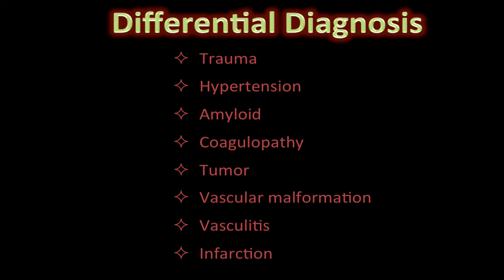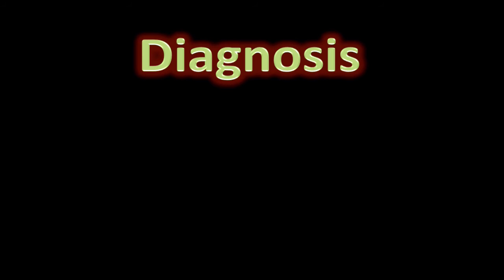Hemorrhagic transformation of a prior infarction is a common clinical scenario. This is usually more easily diagnosed given that the images would show clear-cut signs of infarction, which is something that is not seen on the presented image.